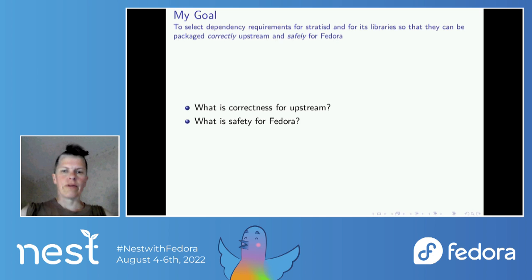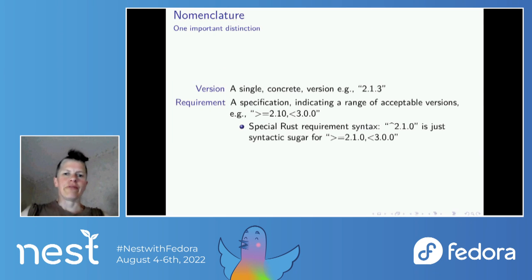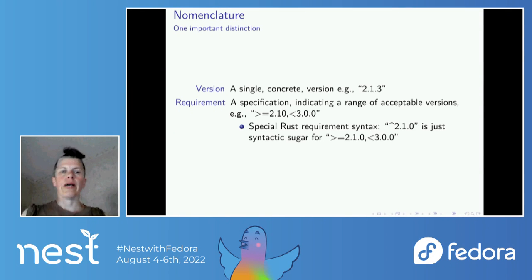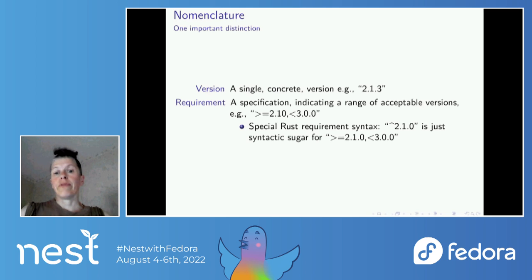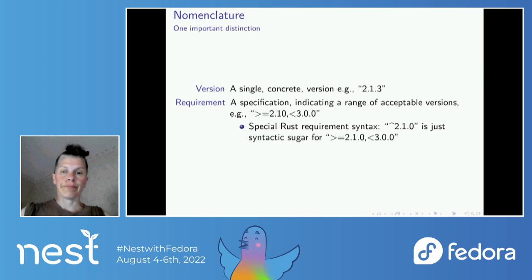You might wonder what those vague words mean, and I'm going to define those versions immediately. But first I have to say something about versions and version requirements, because they get muddled when we talk about them. A version is just a single concrete entity — a snapshot of your project. A version requirement is a way of specifying a whole range of versions that you consider acceptable. For those who aren't familiar with Rust, Rust cargo files use the special caret syntax, which is just sugar for a compound specification indicating greater than or equal to something and less than some other value.